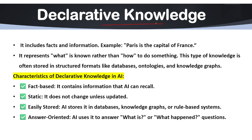First we have declarative knowledge. Declarative knowledge is an essential part of AI because it allows machines to store and recall important facts. AI systems use this knowledge to answer questions, recognize objects and make informed decisions. However, to take any action, AI also needs procedural knowledge as well.